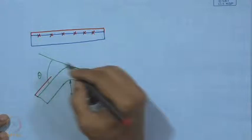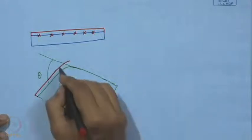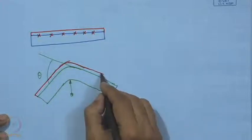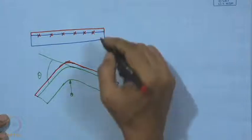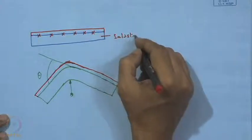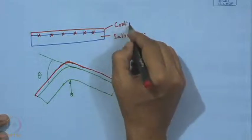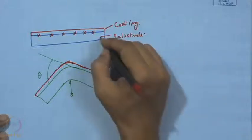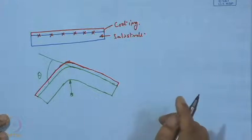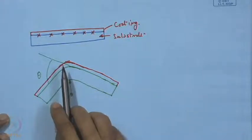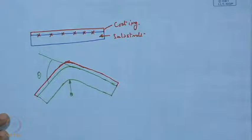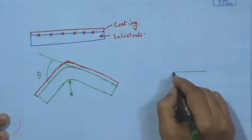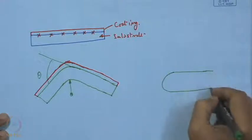The coating follows the deformation or bending of the substrate. The coating and substrate together have undergone bending, and theta starts from zero and can go up to an extreme case of 180 degrees. We can also consider a situation where the piece has undergone bending of 180 degrees.